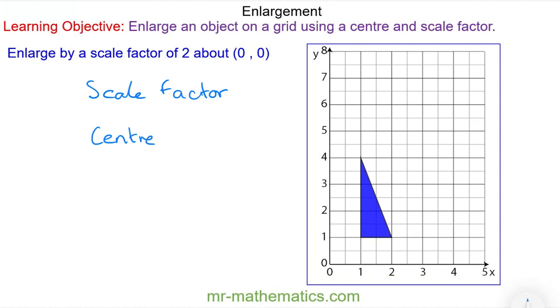A common misconception with enlargement is that it only makes objects bigger and enlargement can reduce the size of an object. In this question the scale factor is 2 so it will make the image twice as big as the object and the center is the origin.